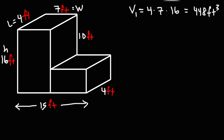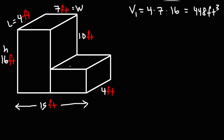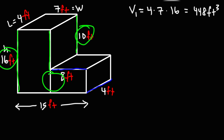Now let's calculate the volume of the second rectangular prism. We know the length is 4, but we don't know the height or the width. This part is 15 and this part is 7, which means this other part is also 7. So this part has to be the difference of 15 and 7 — 15 minus 7 is 8. So this part is 8 feet. Now we need to determine the height. The height of this part is 16, and the height of the adjacent part is 10. So this part has to be the difference of 16 and 10, which is 6 feet.